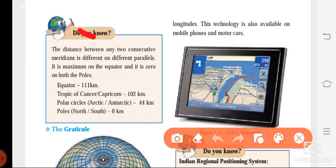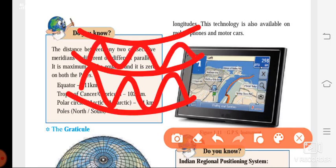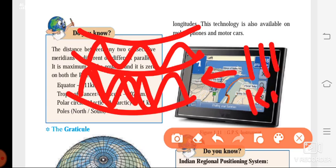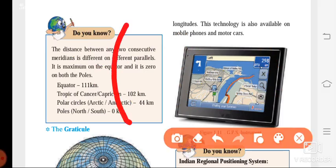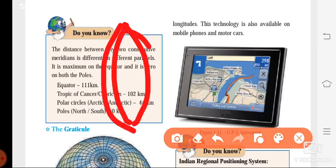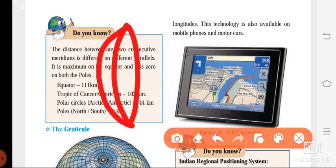Parallels are in the horizontal direction and they all have the same distance everywhere — between any two parallels the distance is 111 kilometers. Whether from 0 to 1 degree, 1 to 2 degree, or 3 to 4 degree, the distance is always the same in parallels. But in meridians, they are tapering towards the poles.